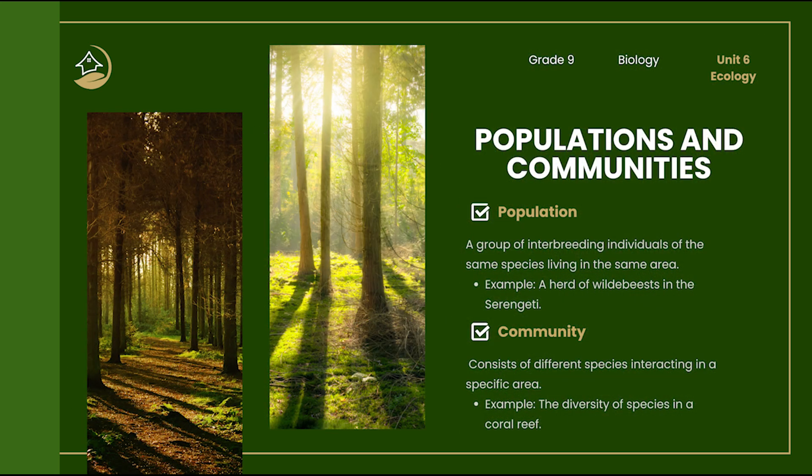Let's zoom in on populations and communities. A population is a group of individuals of the same species that live and reproduce in a specific area. For example, all zebras in the savannah make up a zebra population. A community includes all the living species in that area. For example, a coral reef community includes fish, corals, seaweed, and crustaceans. Understanding this helps us measure biodiversity and track how species interact or affect one another.